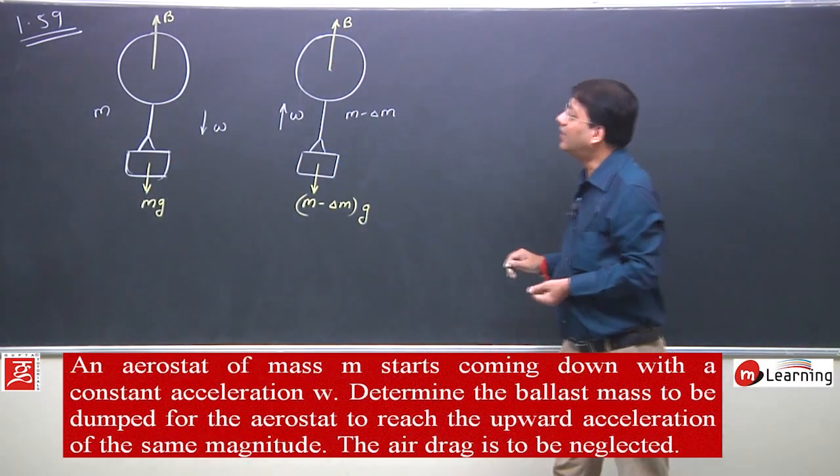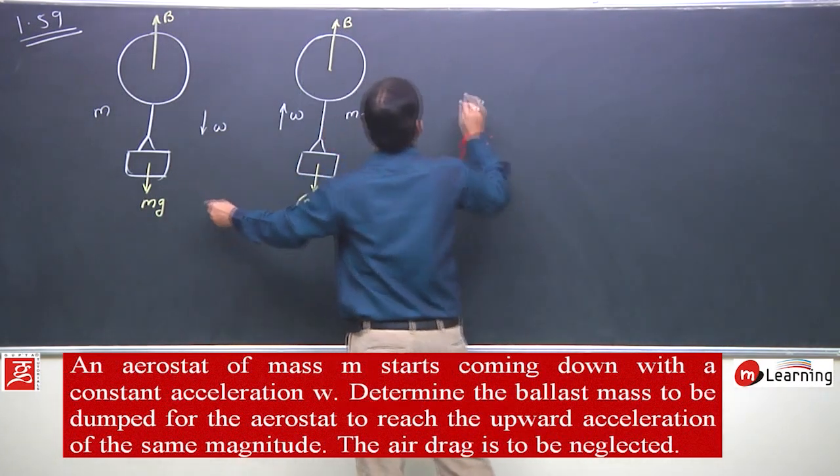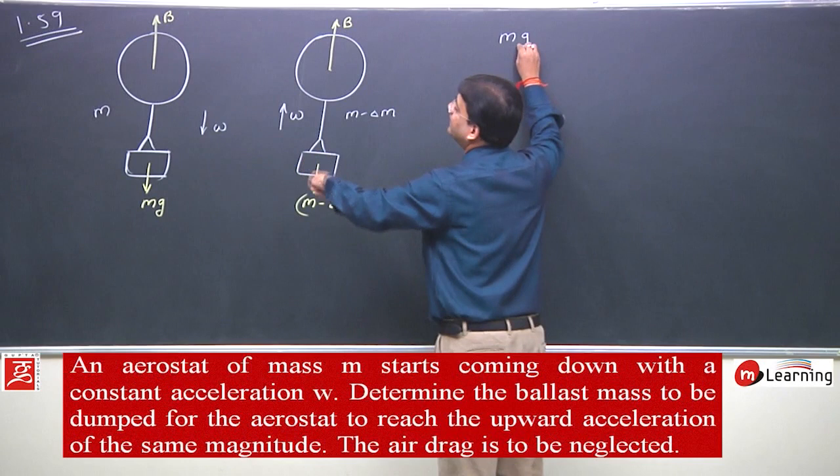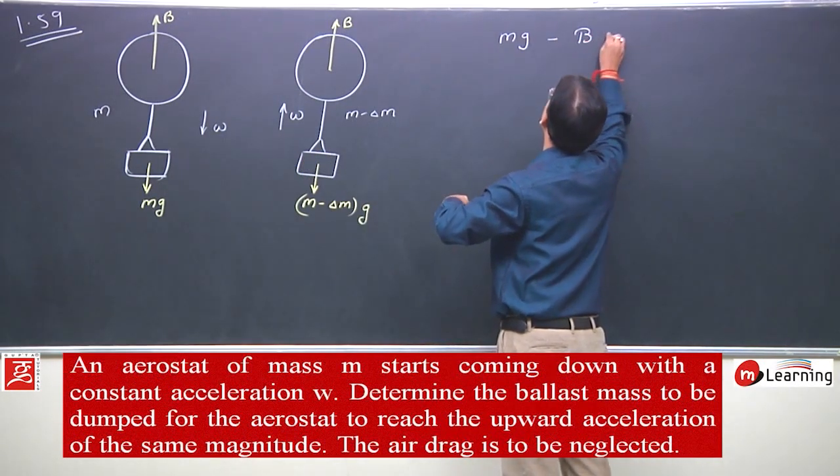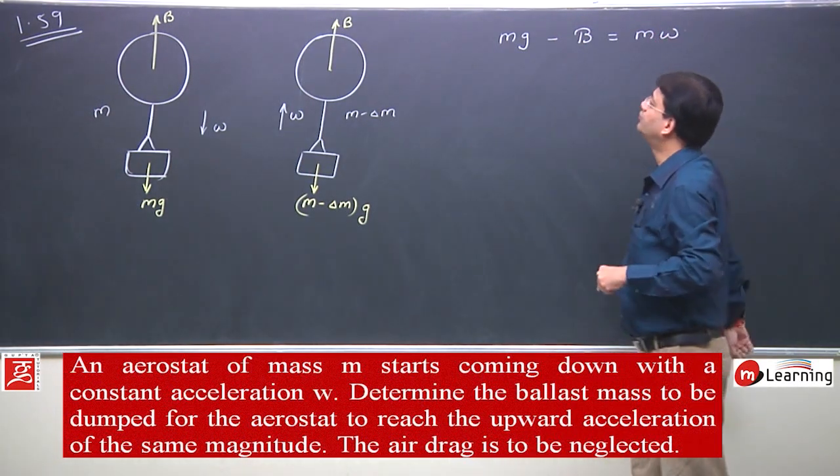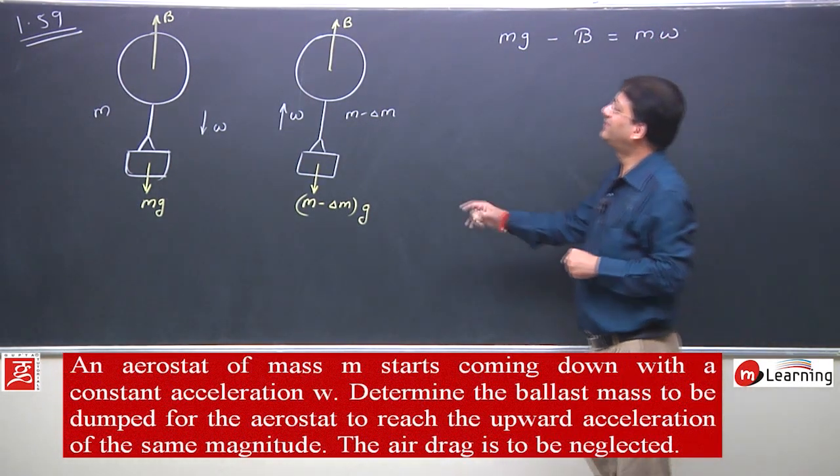I will make two equations. For downward acceleration w: mg minus buoyant force equals mw. This is for the first situation.